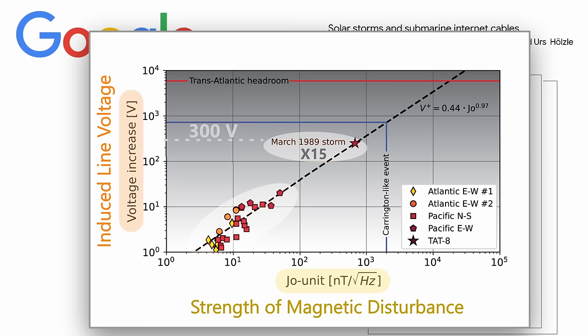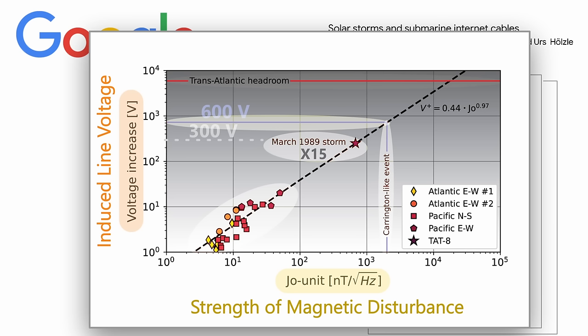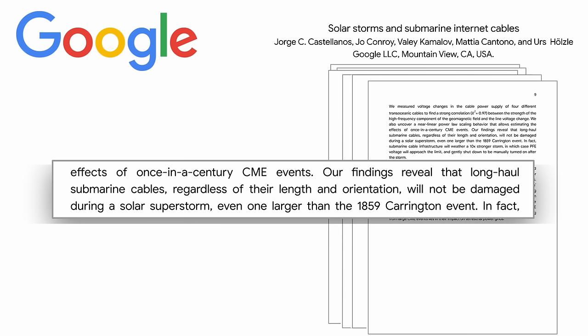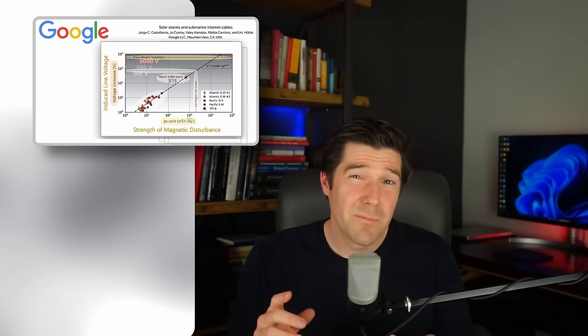Remember, this is the event that shut down Quebec's hydroelectric power grid and came after an X15 solar flare. They also mark an estimate for the voltage induction resulting from a Carrington-like event. The headroom of the transatlantic fiber line is marked at 6,000 volts, which is what they claim the system can handle during any voltage inductions. If you take this chart at face value, you might conclude, as the authors of the study did, that the fiber system is in good shape and will not be damaged during a solar superstorm, even one as large as the 1859 Carrington event. But this conclusion might be more of a rose-colored picture than the real scenario.